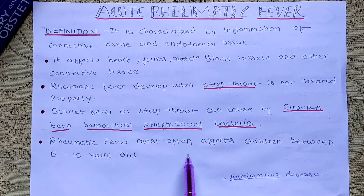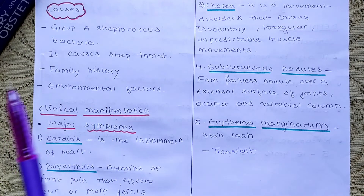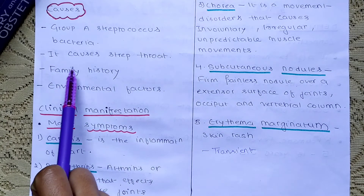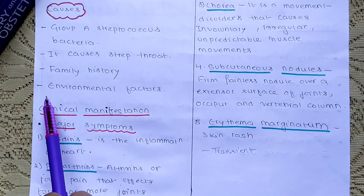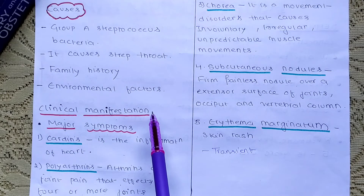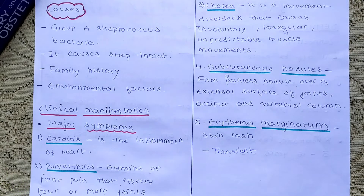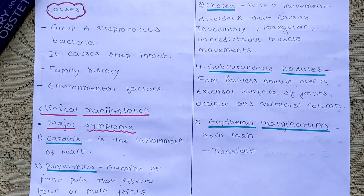Rheumatic fever most often affects children between 5 to 15 years old. Causes of rheumatic fever include group A streptococcus bacteria causing strep throat, family history, environmental factors like unhygienic living conditions, overcrowding in the family, and winter season.